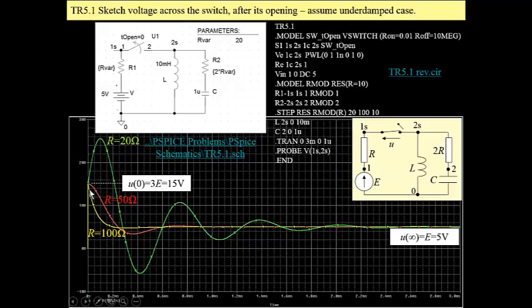However, for R equals 20, we have the maximum value which is greater than 15, which is 3E. E is 5.